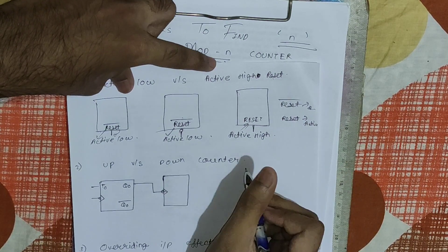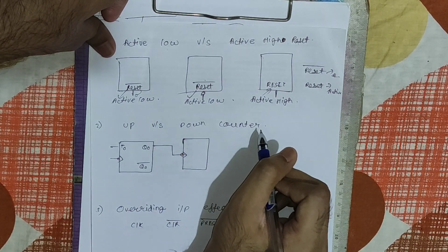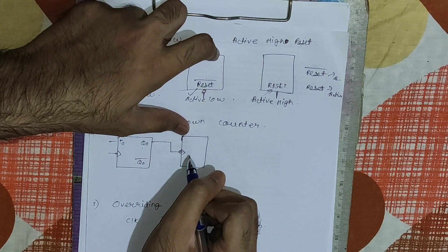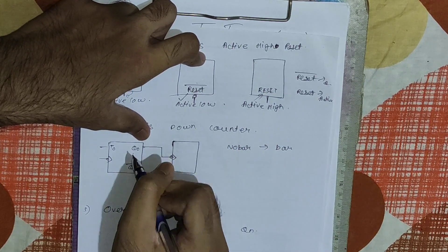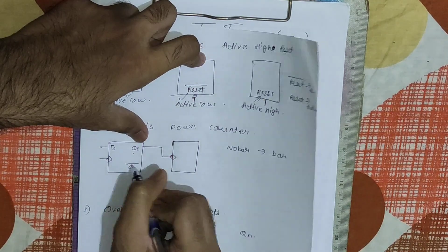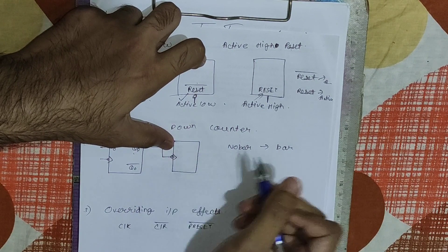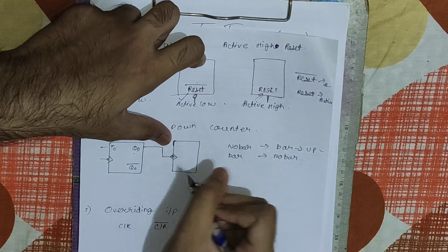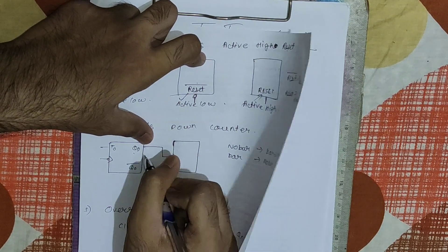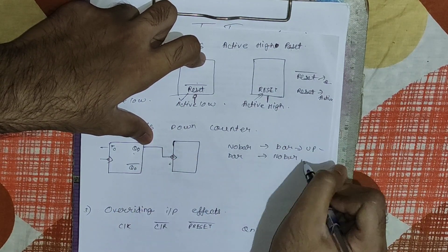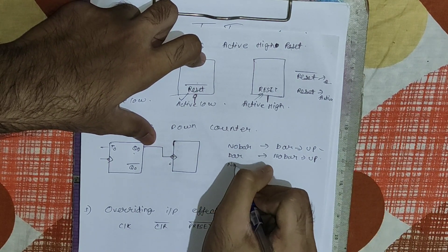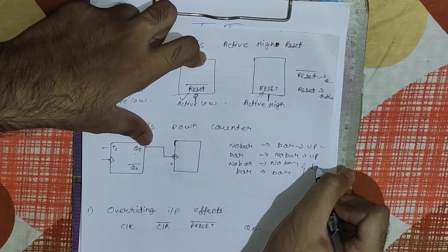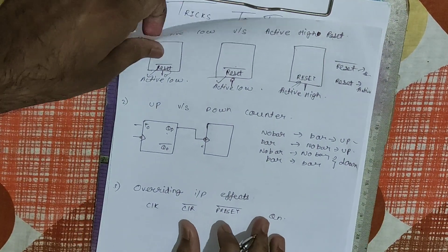The second doubt is how to distinguish between an up counter and a down counter. If the output of one flip-flop is given as a clock to another flip-flop, and the transition is Q (no bar) to Q-bar, that is Q to Q-complement, then it will be an up counter. Similarly, if the transition is from Q-bar to Q (no bar), it is also an up counter. If the transition is Q to Q or Q-bar to Q-bar, then it will be a down counter.